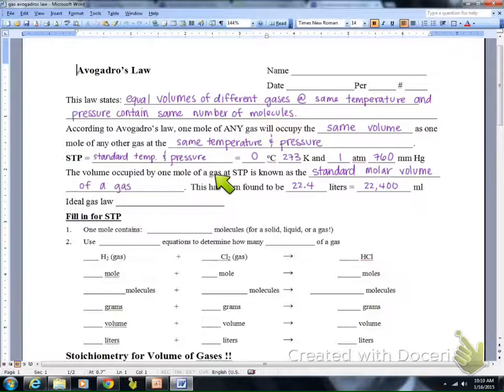The volume occupied by one mole of a gas at STP is known as the standard molar volume of a gas, and this has been found to be 22.4 liters or 22,400 milliliters.